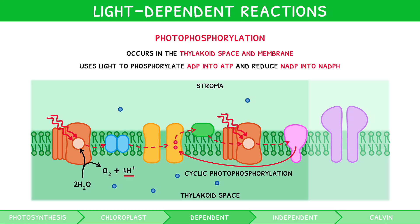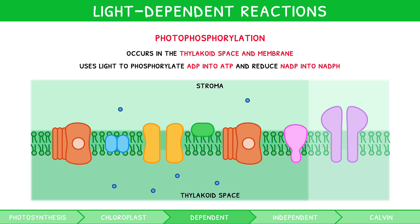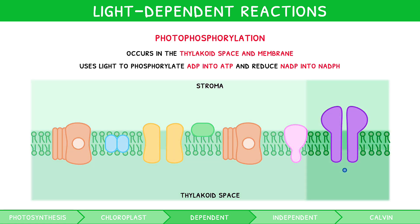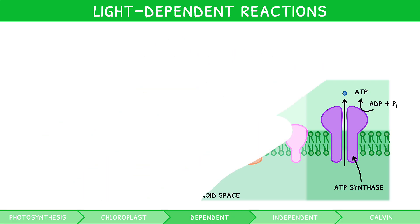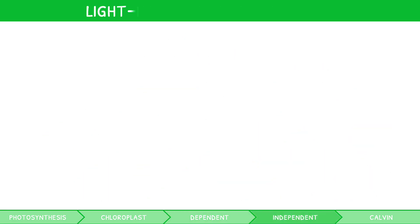The electron transport chain therefore creates a concentration gradient of H+ across the thylakoid membrane, with a high concentration of H+ in the thylakoid space and a low concentration in the stroma. This is then used by chemiosmosis, a two-stage process. The H+ diffuses from the thylakoid space into the stroma through ATP synthase, providing energy for ATP synthase to phosphorylate ADP to produce ATP. So now that we have established a large collection of NADPH, how is this used to generate glucose? Cue the light-independent reactions.